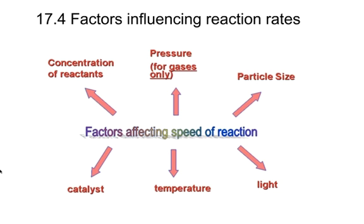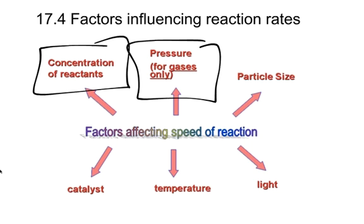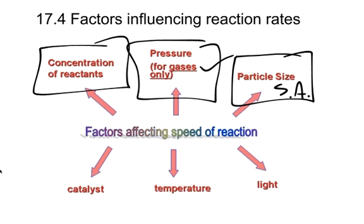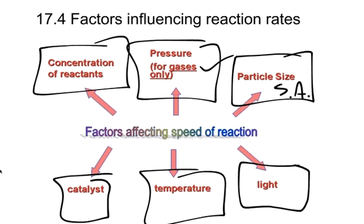What we want to look at in 17.4 is reaction rates and factors that can affect our reaction rate. So here's a summary of things that we can look at: the concentration of reactants, pressure (notice this only influences the reaction rate of gases), the particle size (sometimes we call this the surface area), whether or not there's a catalyst, temperature, and light. Normally it's biological reactions that are influenced by light, but there can be chemical reactions as well that can be affected by light.